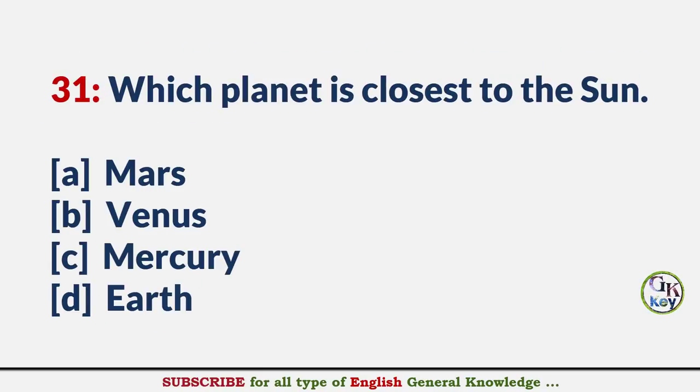Which planet is closest to the sun? Answer C: Mercury.